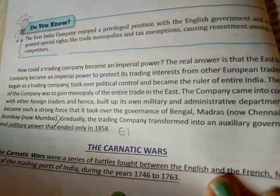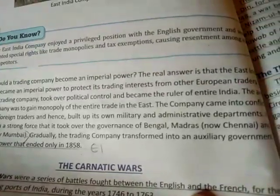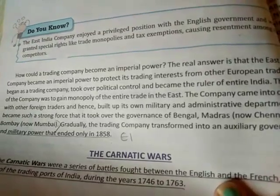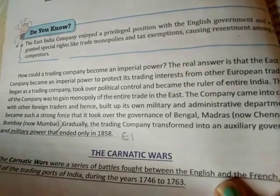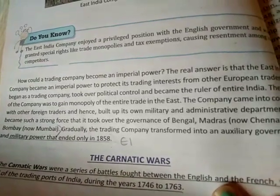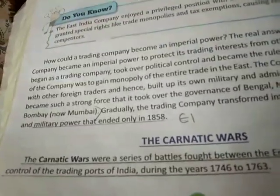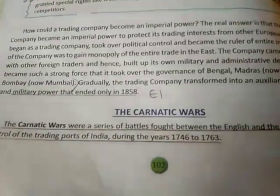The company came into conflict with other foreign traders and built up its own military and administrative department. It became such a strong force that it took over the governance of Bengal, Madras and Bombay. Gradually the trading company transformed into an auxiliary government and military power that ended only in 1858 — not meaning India was free, but that company rule ended and Indian governance went to the hands of the British Crown. Revise the chapter thoroughly; in the next video we will start the first Carnatic wars. Thank you students, have a nice day.